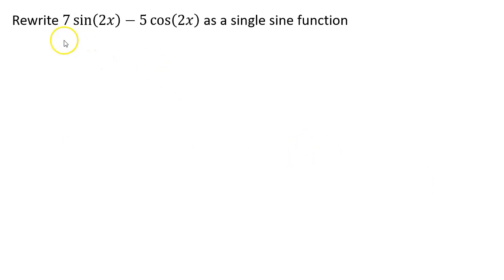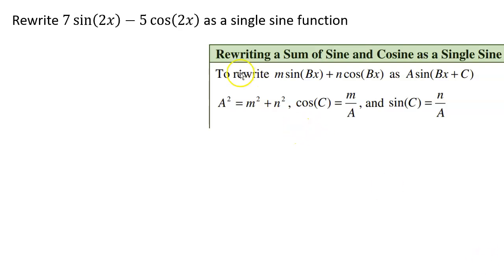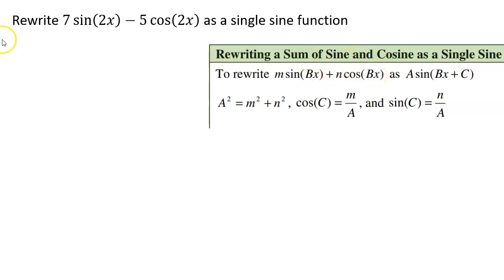We want to rewrite 7 sine 2x minus 5 cosine 2x as a single sine function — specifically as a times sine of bx plus c. In other words, we're rewriting this as a horizontal shift, or phase shift, of a single sine function. It's worth noting that we can only do this if the sine and cosine functions have the same period, which they do in this case.